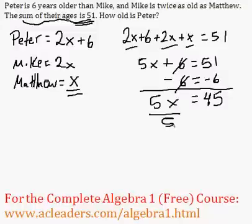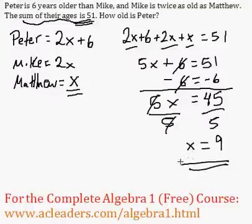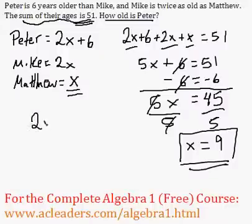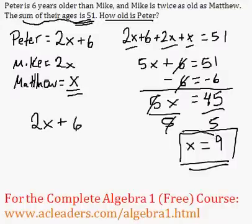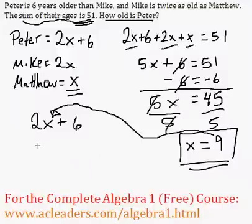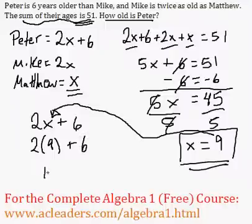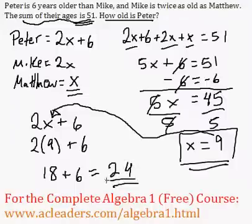Now I can just divide both sides by 5 and find Matthew's age. 45 over 5 is 9. But our question was, how old is Peter? And Peter's age is represented by 2x plus 6. So now we can plug in 9. 2 times 9 is 18, and 18 plus 6 is 24. Peter is 24 years old.